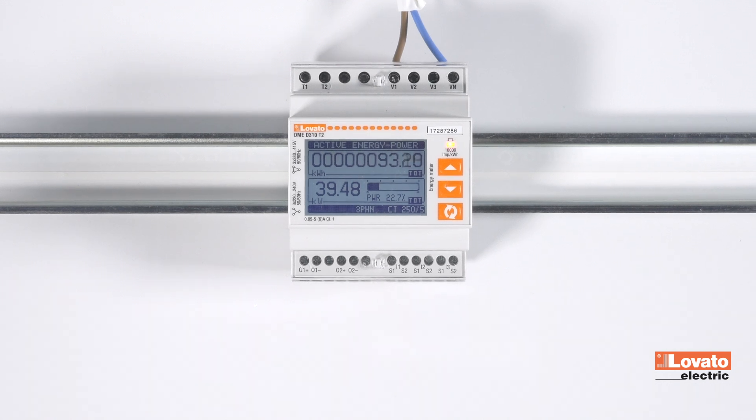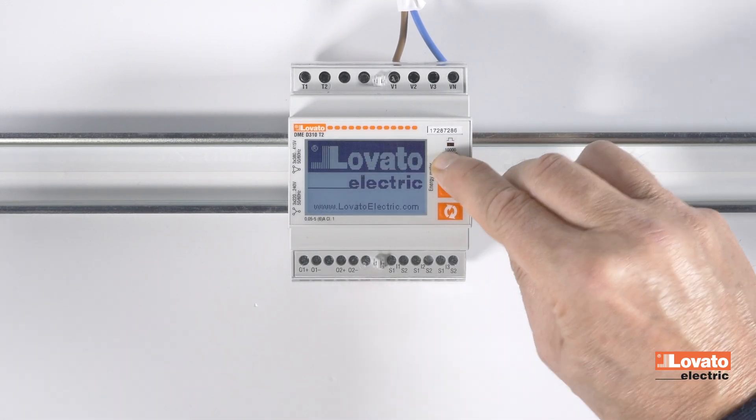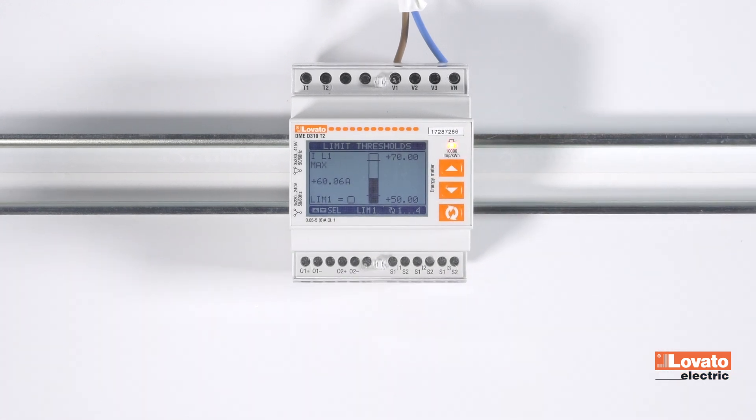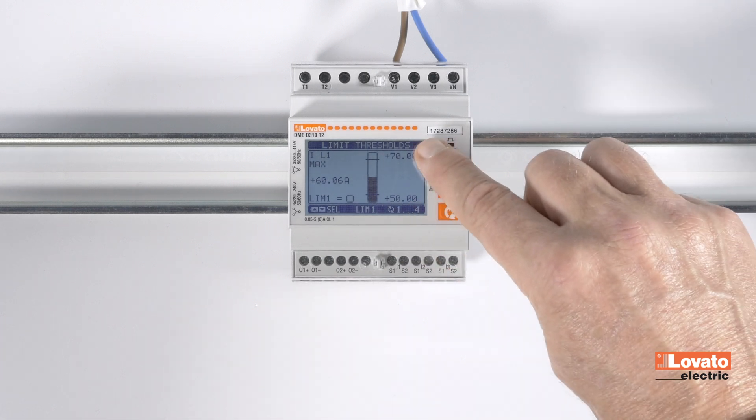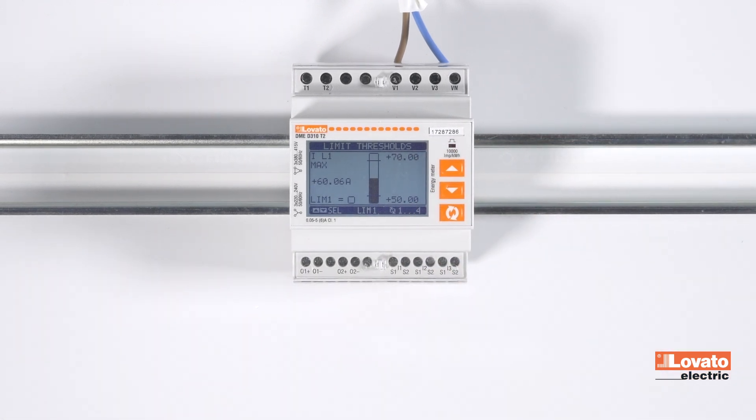To view the limit status, go with the arrows to the specific screen. There it is. You can check the status, thanks to the indicator on the lower left and the two threshold values, upper and lower, on the right, beside the column.